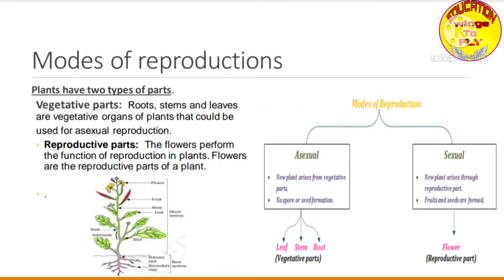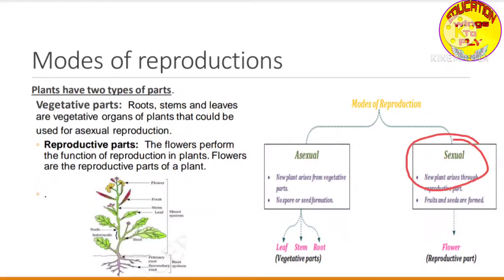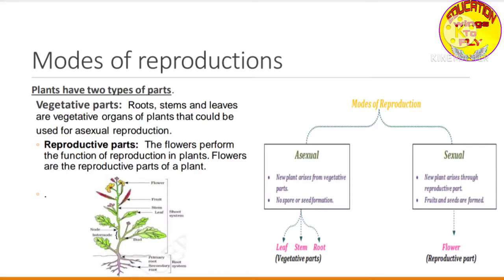Reproduction in plants happens through two modes. The first is asexual reproduction and the second is sexual reproduction. Both are very important to understand. In asexual reproduction, as the name suggests — 'a' means 'without' — so asexual means without sex organs. When sex organs are not involved, that is asexual reproduction. Whereas in sexual reproduction, sex organs are involved and two parents are required — one male and one female.